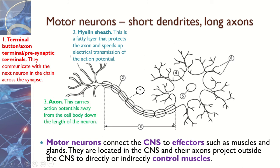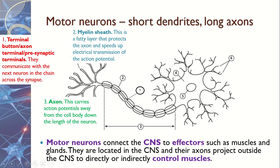Then we've got the axon, which is the long bit that carries the message or action potential all the way down to the ends of the dendrites, so that the message can be sent out into the synaptic gap.